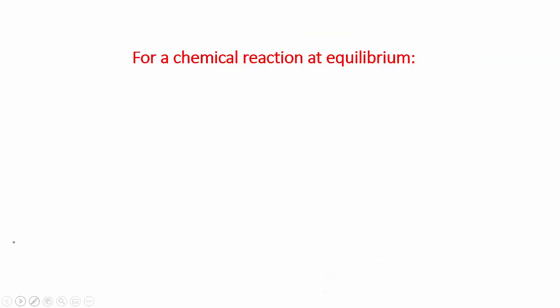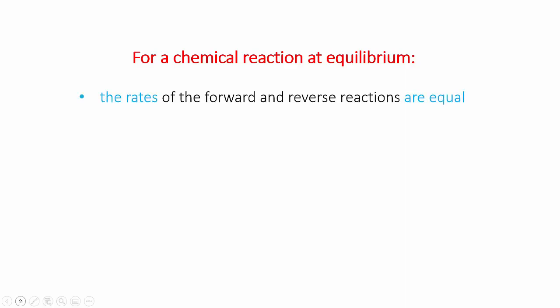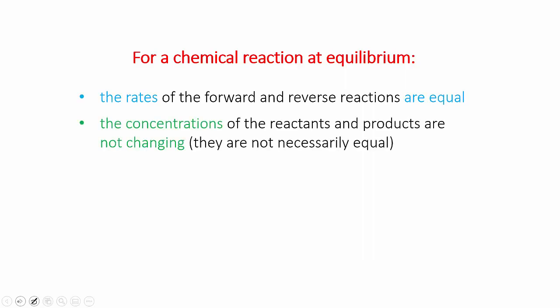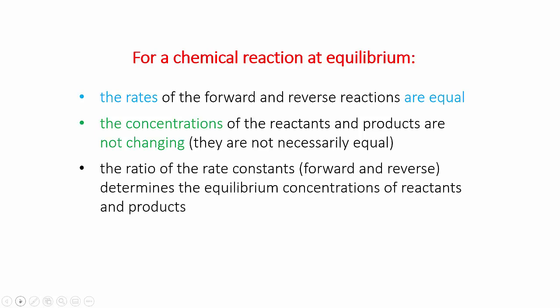The key points are these. If a chemical reaction is at equilibrium, the rates of the forward and reverse reactions are equal — this is the primary definition of equilibrium. When this is the case, the concentrations of reactants and products are not changing, but they don't necessarily have to be equal. Finally, it's the ratio of the rate constants of the forward and reverse reactions that determines the equilibrium concentrations. In equilibrium chemistry, we simplify this ratio into a single constant, Keq — the equilibrium constant — which is different for each reaction. I'll show you how to use this in coming videos.